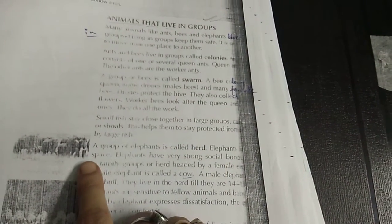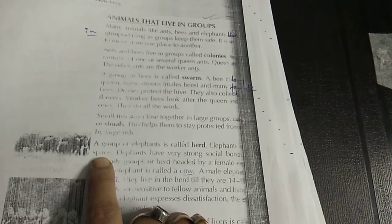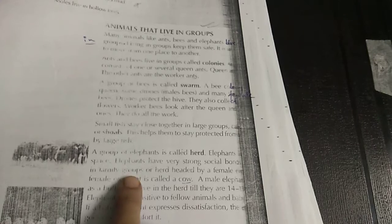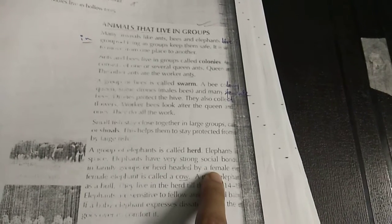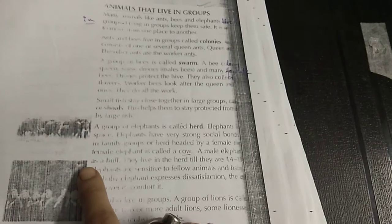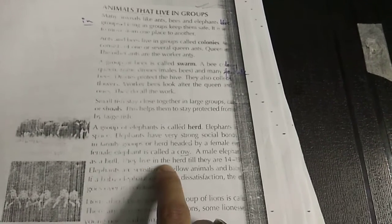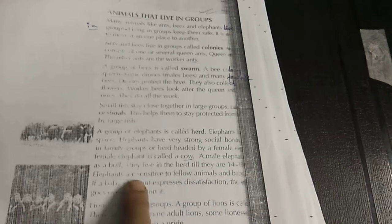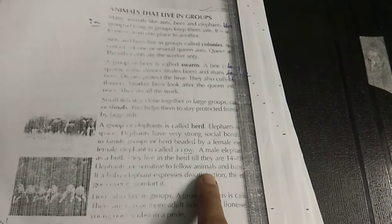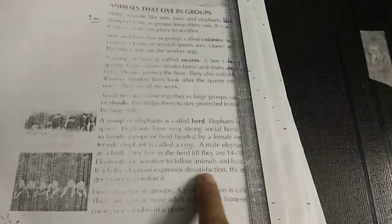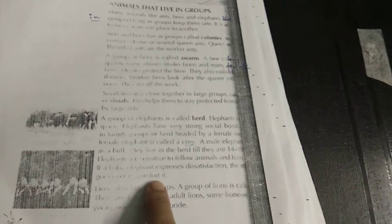Elephants have very strong social bones. In family group or herd headed by a female. Female elephant is called a cow. A male elephant is called a bull. They live in the herd till the age of 14. Elephants are sensitive to fellow and other animals. And if a baby elephant express dissatisfaction, all the other goes over it to comfort it.